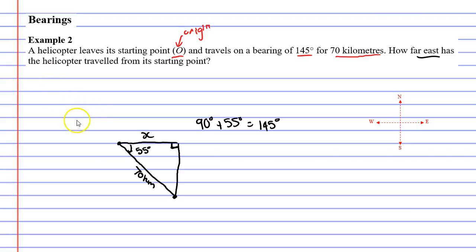Let's start by labelling our triangle. Opposite our right angle is our hypotenuse at 70 kilometres. Our marked angle of 55 degrees has a side opposite that. And then finally we have our adjacent which is x.